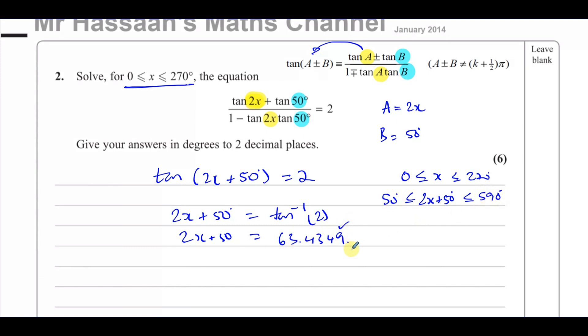Now this answer is in the range. Now how do we find the other answers using the tangent curve? Well, they repeat every 180 degrees.